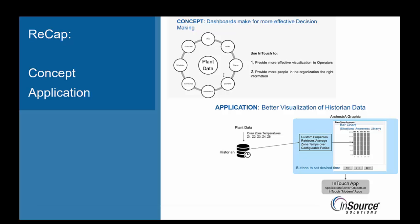To recap, the concept was to provide information in ways that help people make better decisions — to keep them from having to do extra work to find the data they really need. We have lots of data, so let's do a better job of providing it to people. The application showed how to better integrate historian data and use the power of ArchestrA Graphics to display that data for operators or other people in the plant. I really hope this was helpful — thank you for watching, and make it a great day.